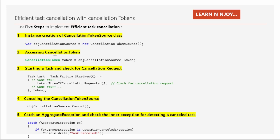Step number two: accessing the cancellation token. We use the token property of the objCancellationSource that we created in step one. That's: CancellationToken token = objCancellationSource.Token. That's how we access the cancellation token.